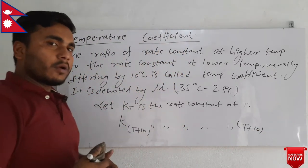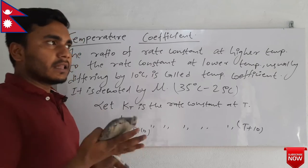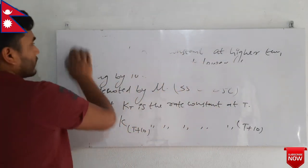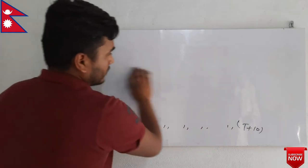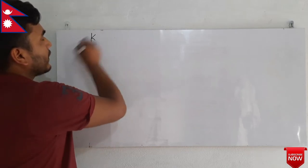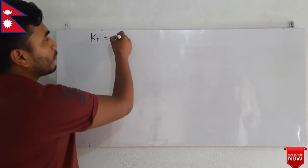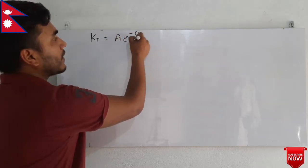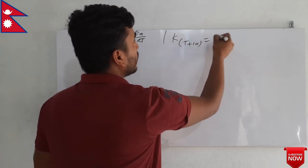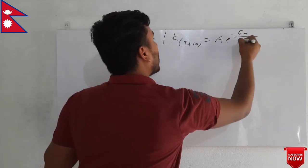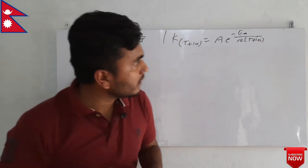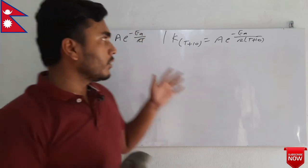Now we are going to see a formula to calculate rate constant. We know that KT is equal to, according to the Arrhenius equation, A·e to the power minus Ea by RT. And KT plus 10 will be equal to A·e to the power minus Ea by R(T plus 10). We are just replacing T by T plus 10 in this case.